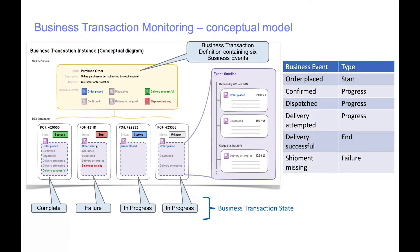The second transaction has failed — it's in the failed state because the shipment went missing. The third transaction is in progress as a start event was received. The fourth transaction is also in progress: the order was placed, it was dispatched, and the delivery has been attempted, but delivery has not been successful yet, so it is in progress.